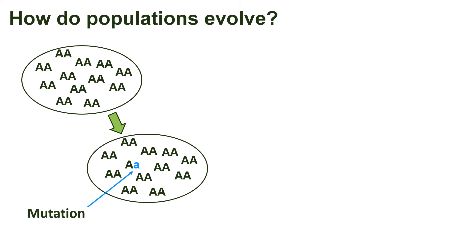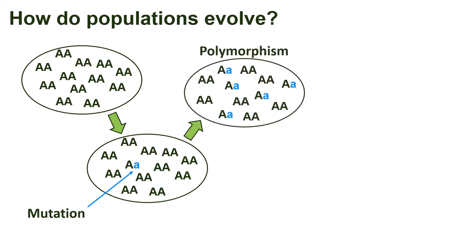Most novel alleles are lost due to random chance, but sometimes they increase in frequency. Sometime later, a mutation occurs in one of the individuals, changing the capital A allele to a new allele represented by lowercase a. When this happens, the population would have multiple copies of the mutant allele, all of which are copies descended from that one original. It's not more mutation events happening — it's reproduction of that first mutation giving rise to multiple copies of itself, generations into the future. When an allele is present at an appreciable frequency, we call it a polymorphism, and we say that the population is polymorphic at that locus.